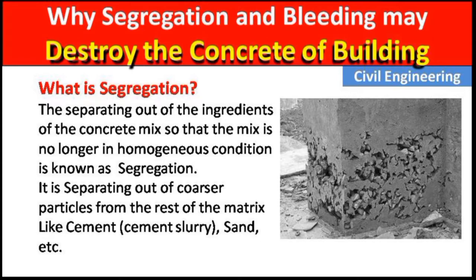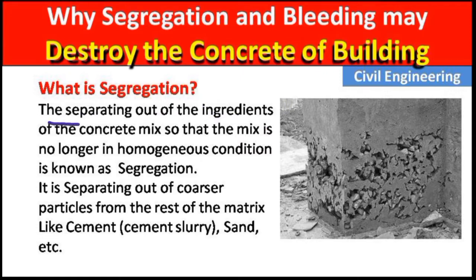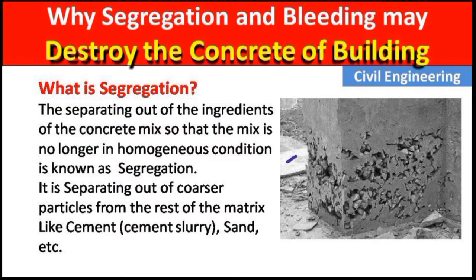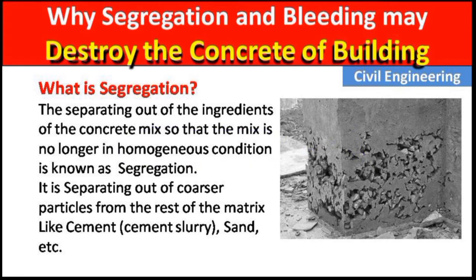What is segregation? It is the separating out of ingredients — meaning sand, cement, aggregate, etc. — of a concrete mix, so that the mix is no longer in a homogeneous condition. This is known as segregation. When we mix the concrete, it does not remain in the homogeneous condition; some aggregate may fall down or some cement slurry remains above the concrete structure.